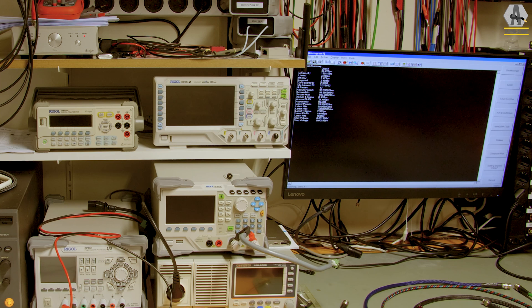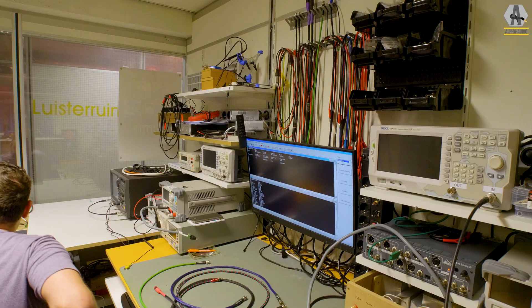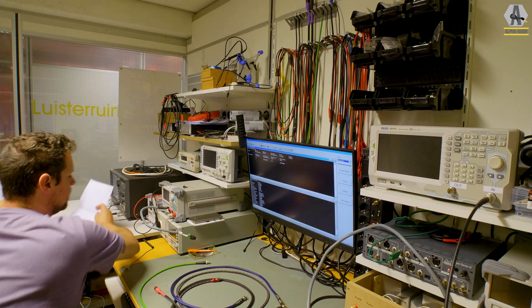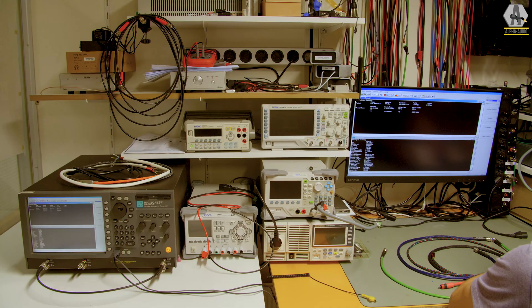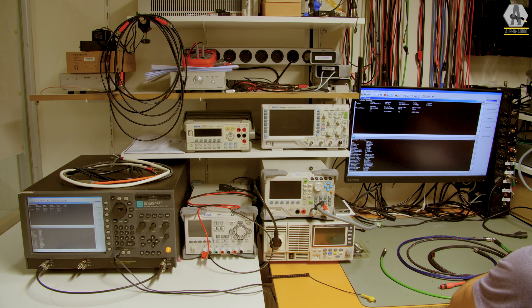And I will also do a phase noise measurement. Minus 66, that's about correct. Let me write it down, because then we can actually compare them. It's two and a half picoseconds of jitter and minus 66.9 with 2.66 PS.